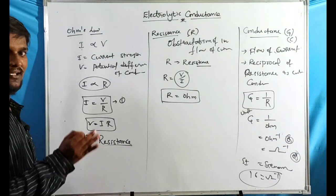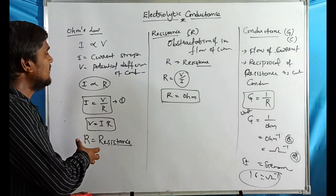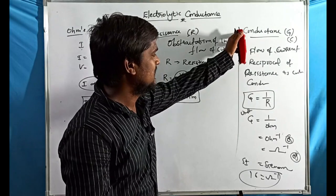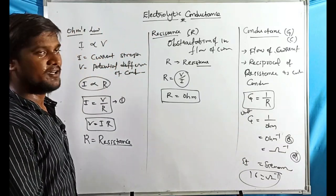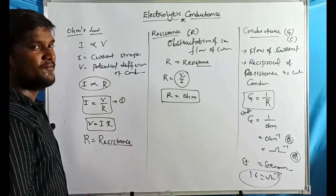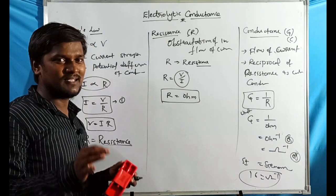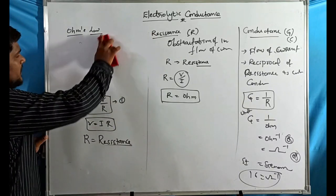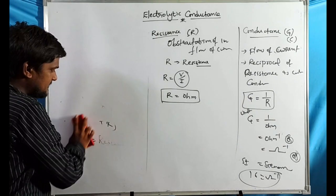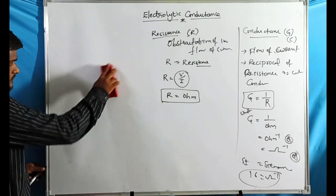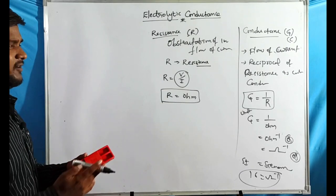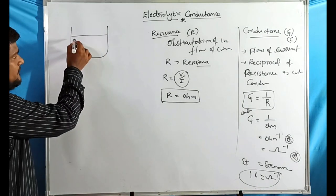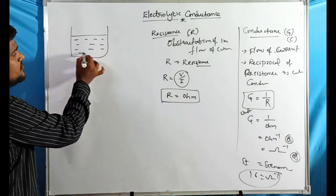It is very important to be aware of the units of each and every term in electrochemistry. Based on Ohm's law, we find resistance and conductance with their formulas and units. Now let us discuss resistivity. Here is the schematic diagram of an electrochemical cell — a vessel containing electrolytic solution with two electrodes.